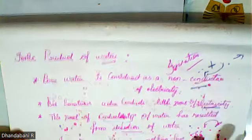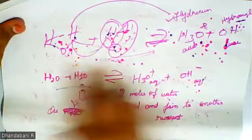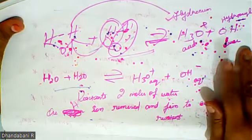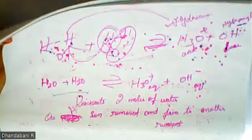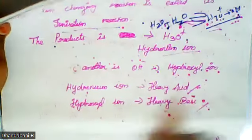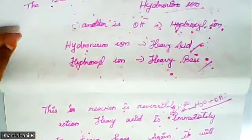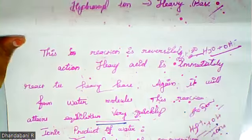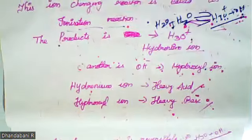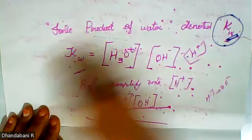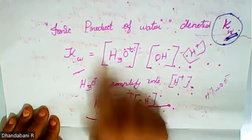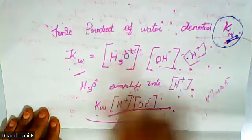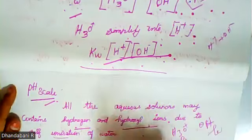Today's topic is ionic product of water. The ionic product means: one is hydronium, one is hydroxyl — one is acid and then base — they join to form water molecules. In the reaction, being reversible, it reacts very fast and attains equilibrium state easily. On the ionic product of water, the product concentration of H3O+ and OH− is the ionic product, denoted KW. H3O+ is simplified to H+, so KW equals [H+][OH−].